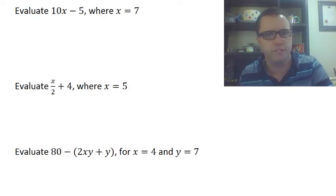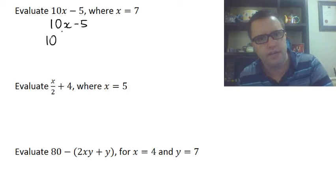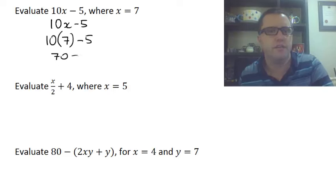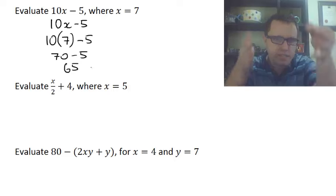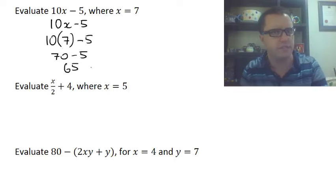That means I've got this expression here, 10x minus 5. So it's always a good idea to write it out yourself first. So 10x minus 5. I'm going to replace the x with 7. So I've got 10, I'm going to put the 7 inside brackets, minus 5. So remember this means 10 times 7, which is 70, minus 5, which is 65. Done. Moving down the page nicely.